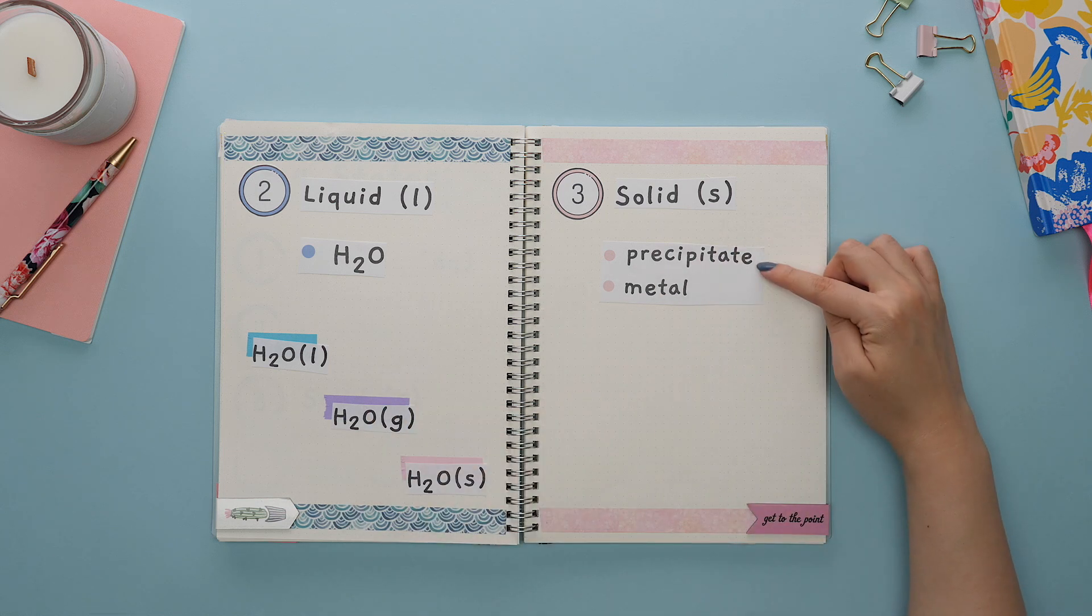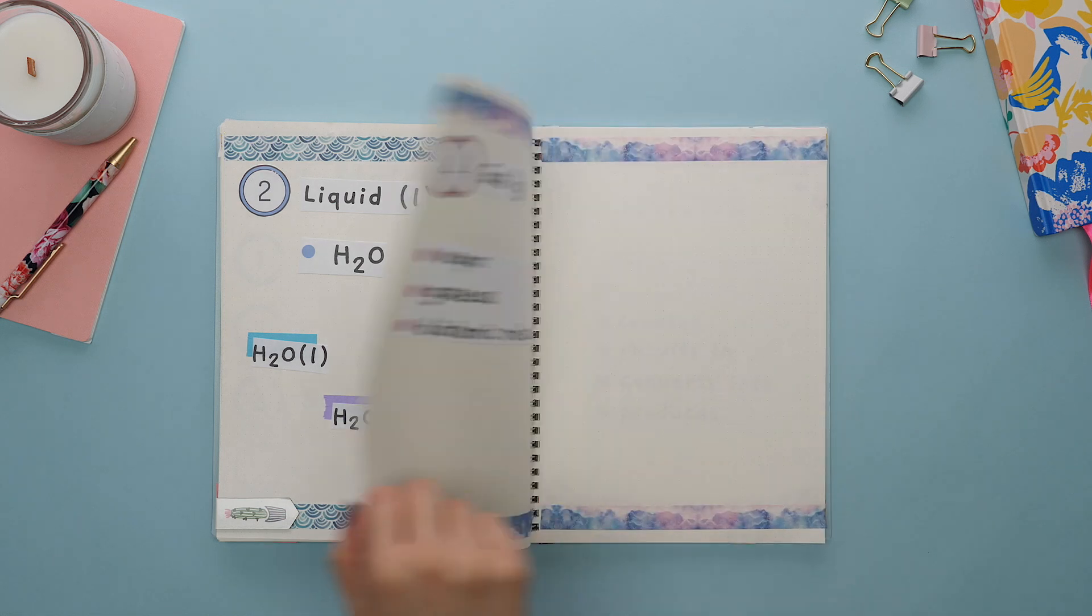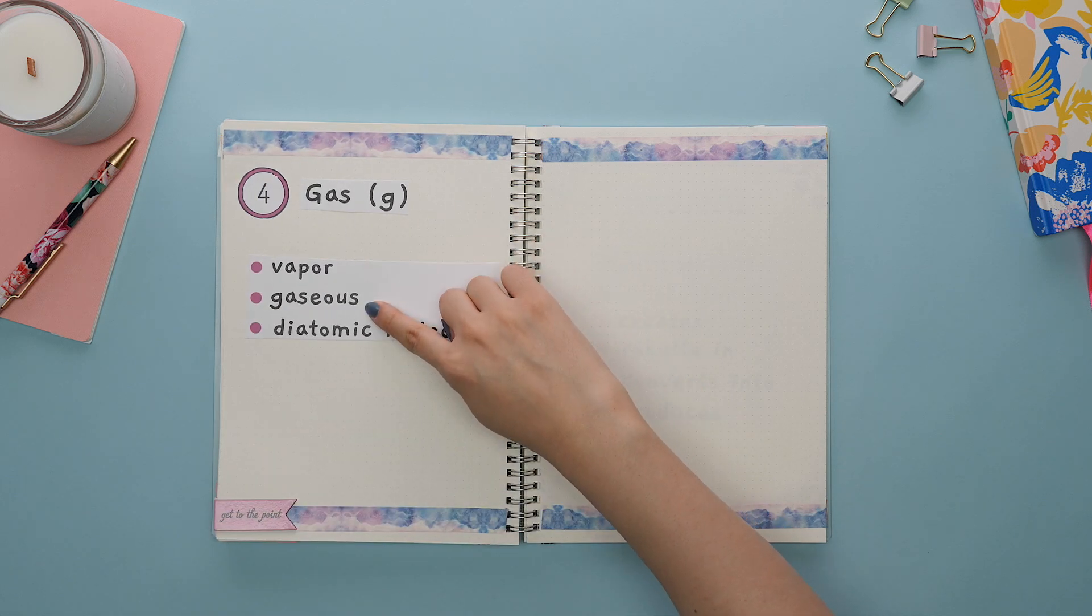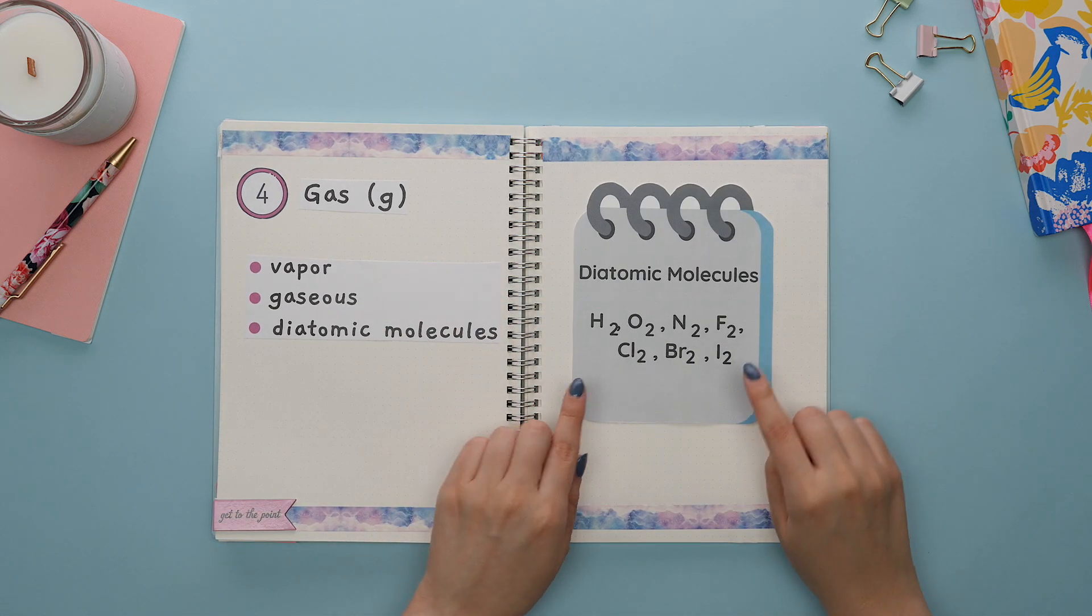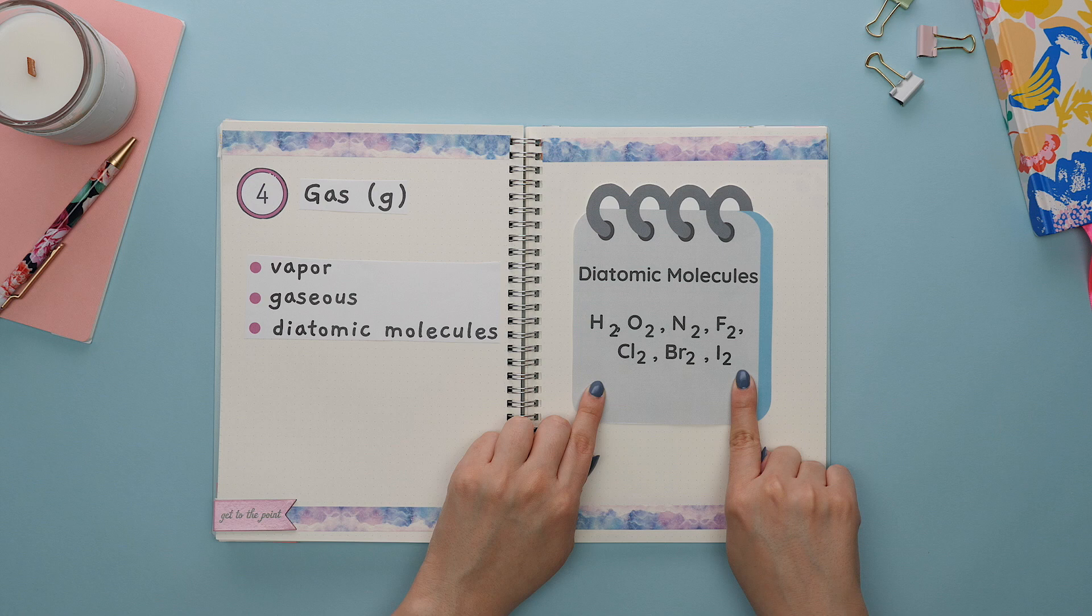If a word problem states a precipitate, or metal, then this is a solid. For a gas, the keywords are vapor, gaseous, or any of these diatomic molecules. Note, diatomic molecules are elements that exist in pairs. These are our diatomic molecules.